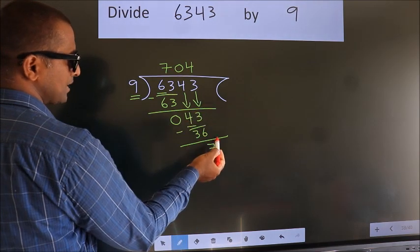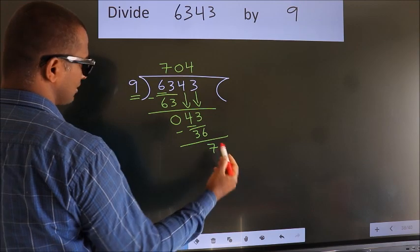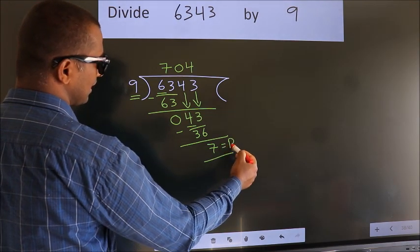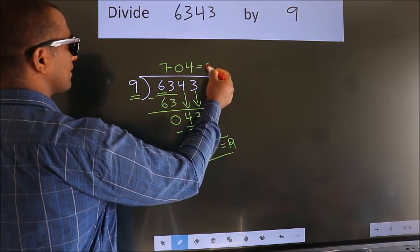No more numbers to bring it down. So we stop here. This is our remainder. This is our quotient.